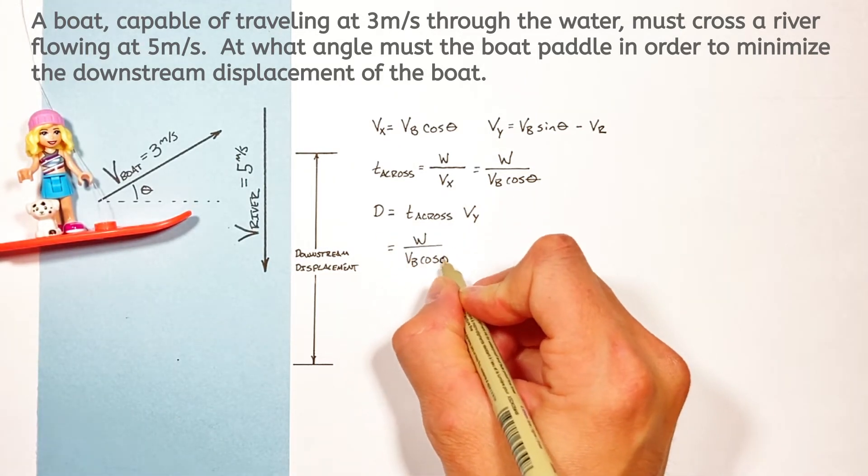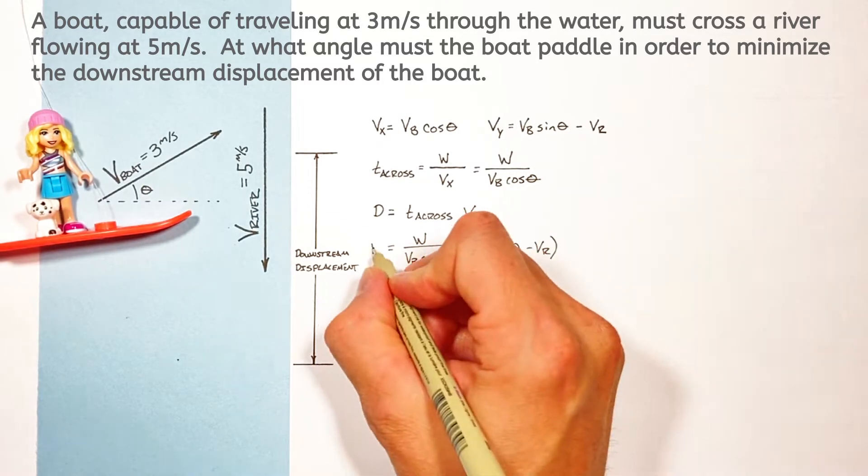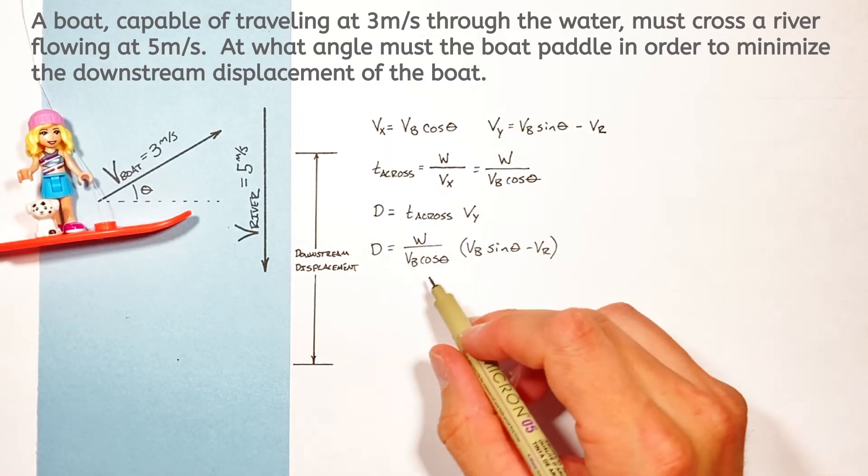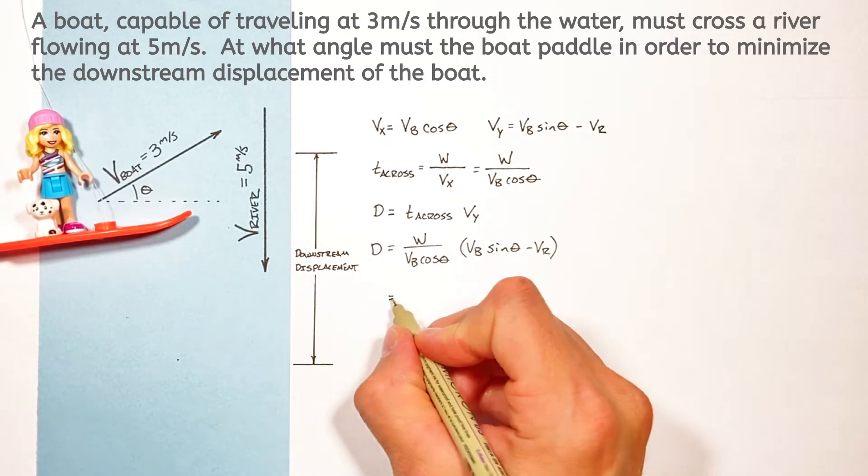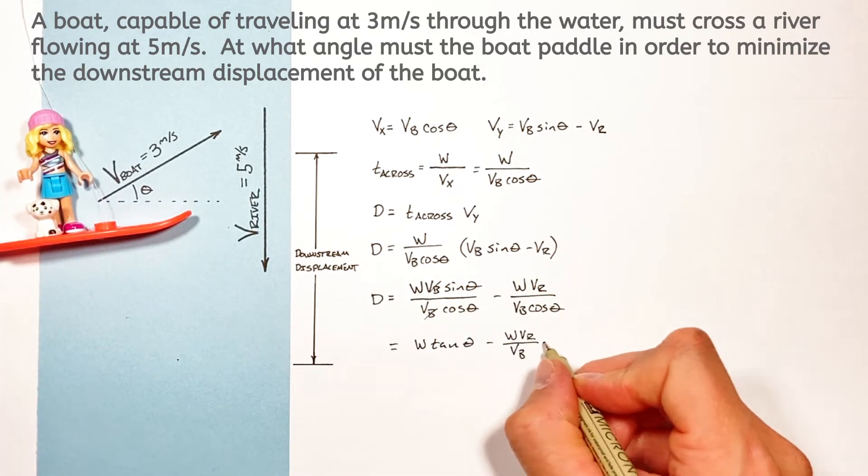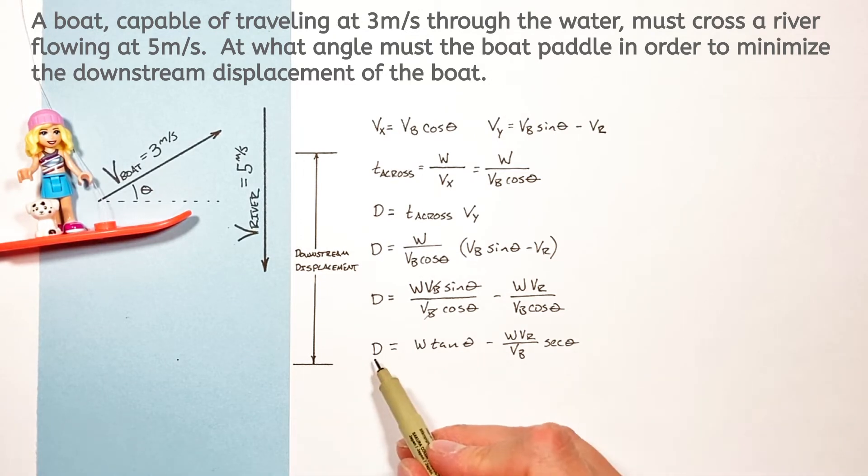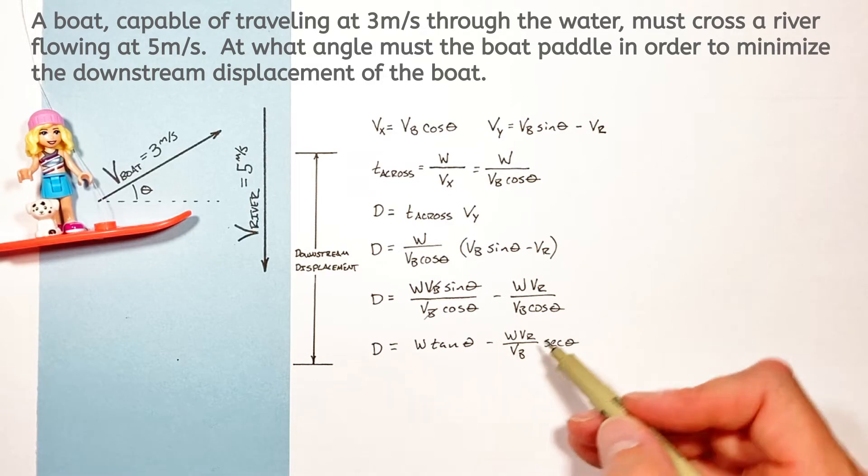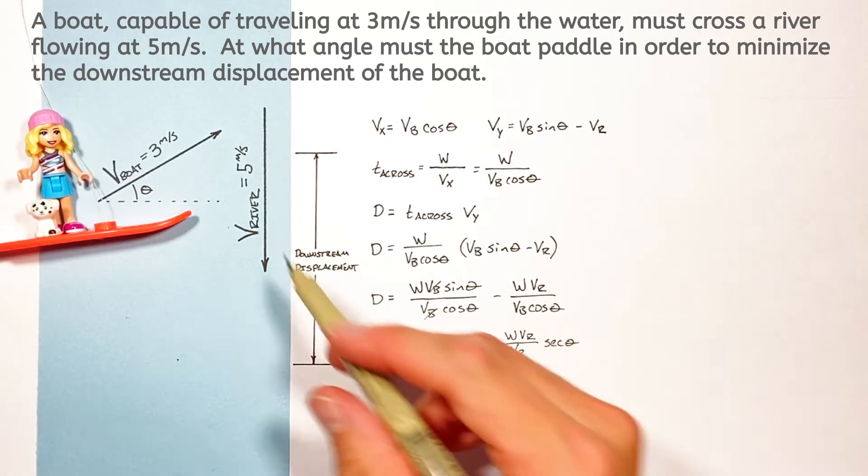So subbing in our expressions for time as well as VY we get this expression and distributing the time into this function we'll get this which cleans up rather nicely into this expression which relates the downstream displacement to the width of the river as well as the angle and the velocity of both the river and the boat.